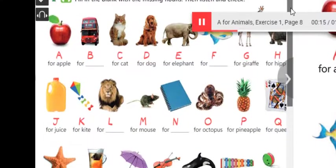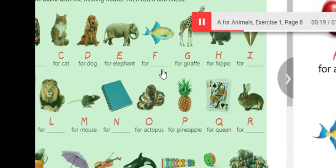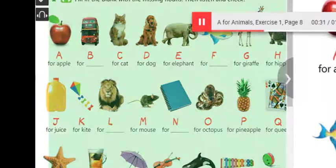E for elephant, F for fish, G for giraffe, H for hippo, I for ice cream, J for juice, K for kite.